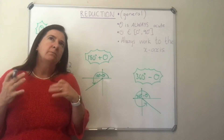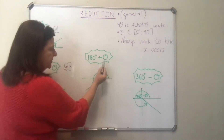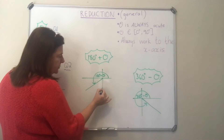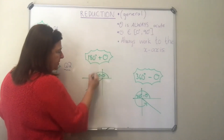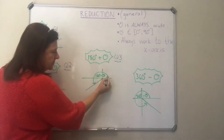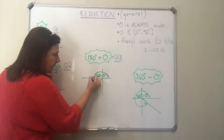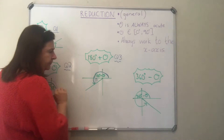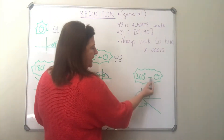If theta is, say, 70 degrees, 180 plus 70 is 250, and 250 is between 180 and 270. So whenever we have 180 degrees plus theta it's going to lie in quadrant three. It makes logical sense because 180 takes us to the 180-degree line, and then we're adding on theta, which is our acute angle. Fourth quadrant: 360 degrees minus theta.